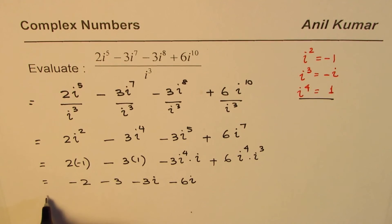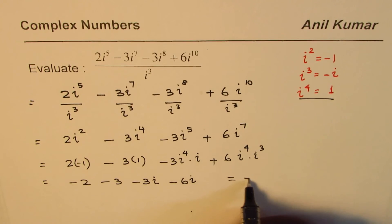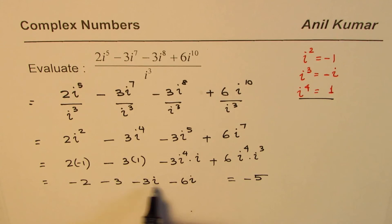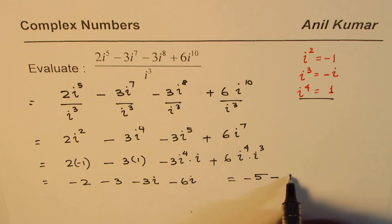So we can combine these terms. We could write this as -2 - 3 is -5, and these two numbers will give us -9i.